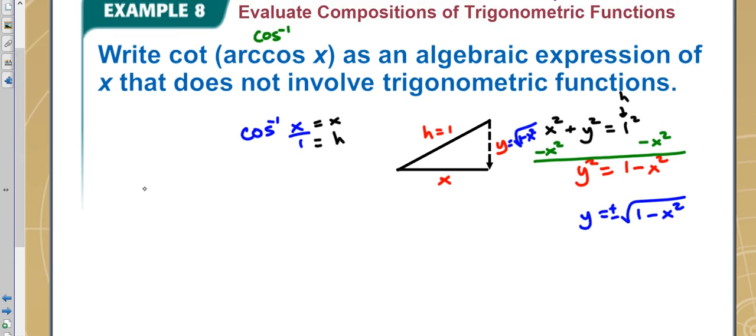Again, this technically finds the angle, so we found this angle. Now if you plug that into cotangent, it would give you whatever cotangent's relationship is.